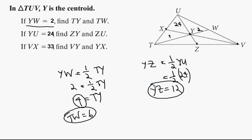And then again, we have the two parts, so we can add them together to get the whole. So UZ, or ZU either way, is 36.